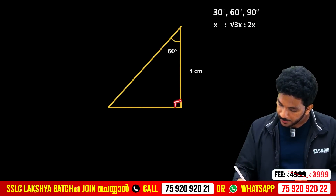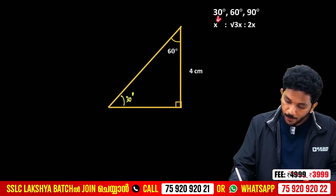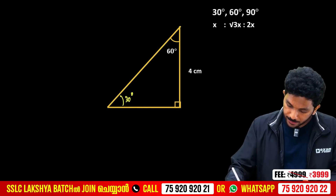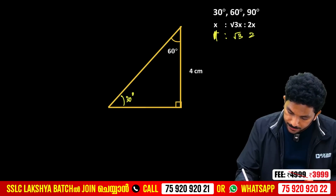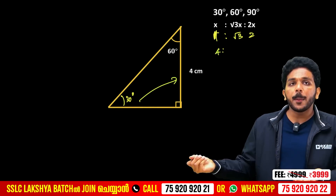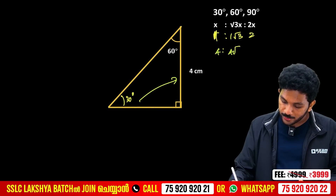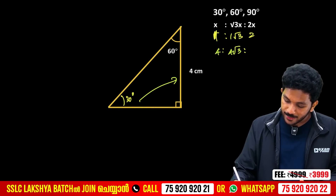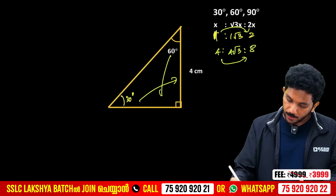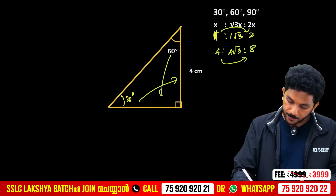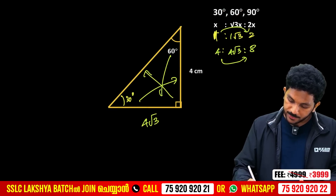Here we have a triangle with angles 90 and 60. The 30-opposite side x is 1, √3, 2. If we have the 30-opposite x equal to 4, then using 1:√3:2, the 1-double is 2 so 4-double is 8. Then the 60-opposite is 4√3, and the 90-opposite is 8.